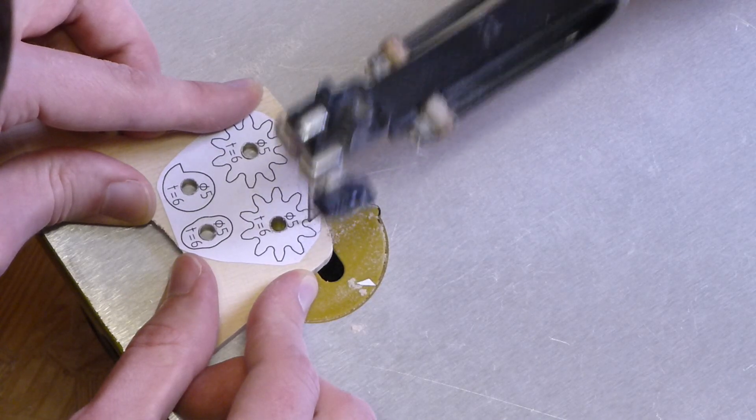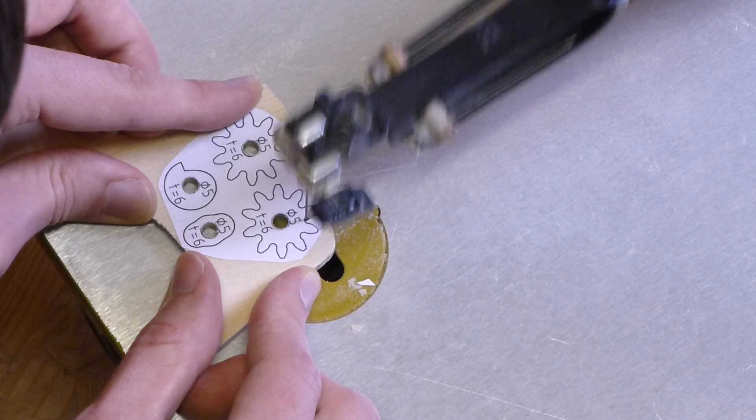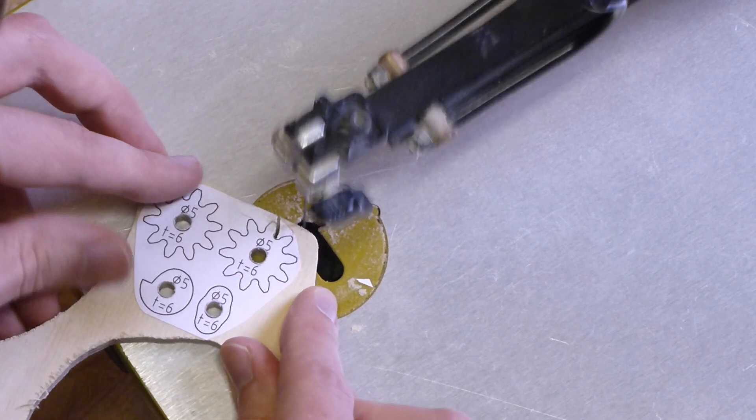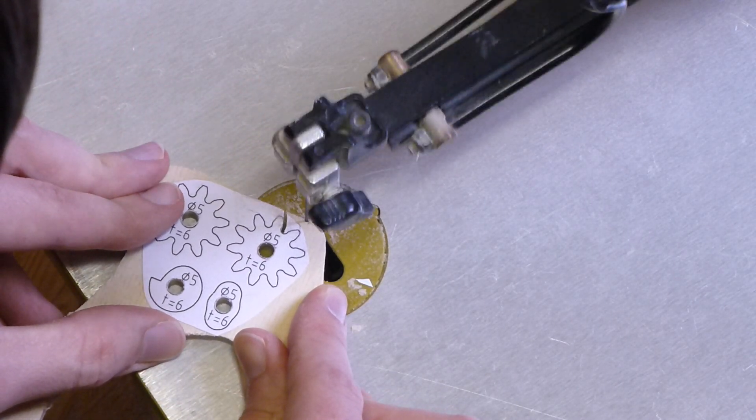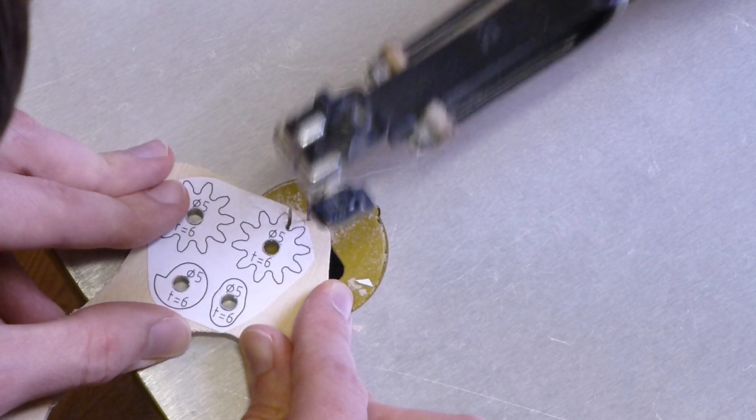Wichtig beim Aussägen der Zahnräder ist, dass man die Linie gerade so wegsägt. Diese darf am Ende nicht mehr zu sehen sein. Dann haben die Zahnräder auch genügend Spiele.